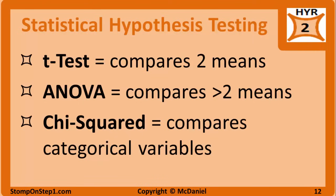Lastly, we have statistical hypothesis testing, which is how we test the null hypothesis and determine statistical significance. For the USMLE Step 1 Medical Board Exam, all you need to know is when to use the different tests — you don't need to know how to perform them. When you are comparing the mean of two groups, you use a t-test. When you are comparing the mean of three or more groups, you use an ANOVA test. When you are using categorical variables instead of numerical variables, use a chi-squared test — categories such as gender or the presence or absence of a disease.